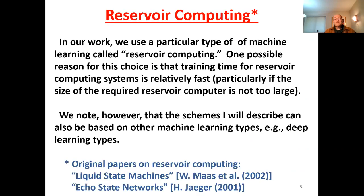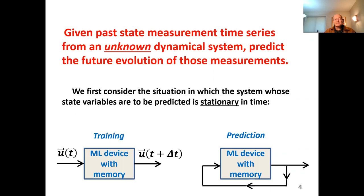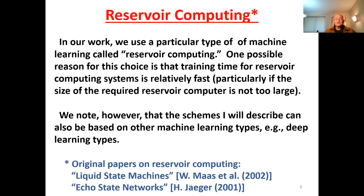The question is what to put in the gray box — what is the machine learning device. I'm going to use reservoir computing. One reason is that training time is relatively fast, particularly if the required reservoir size is not too large. Most of what I'm talking about can also be done using other machine learning types such as deep learning based on back propagation.